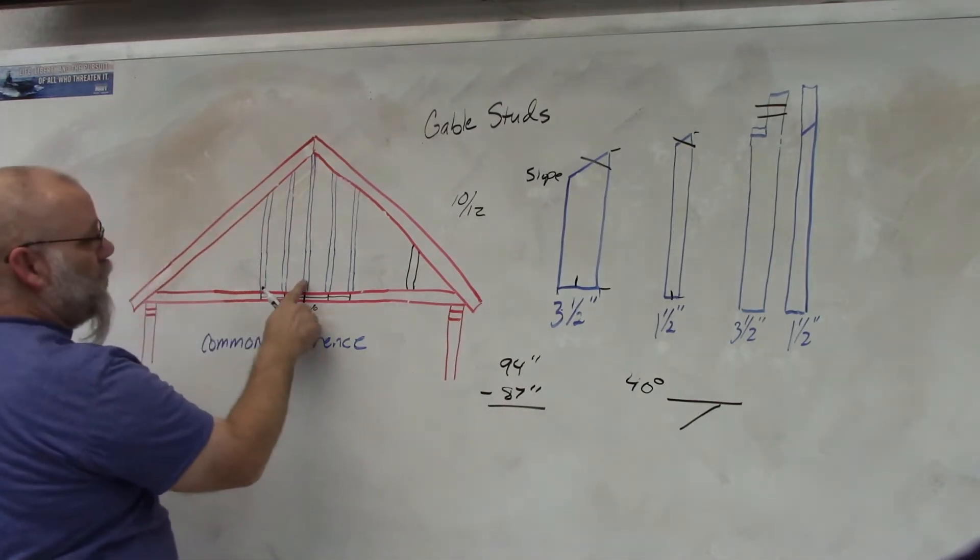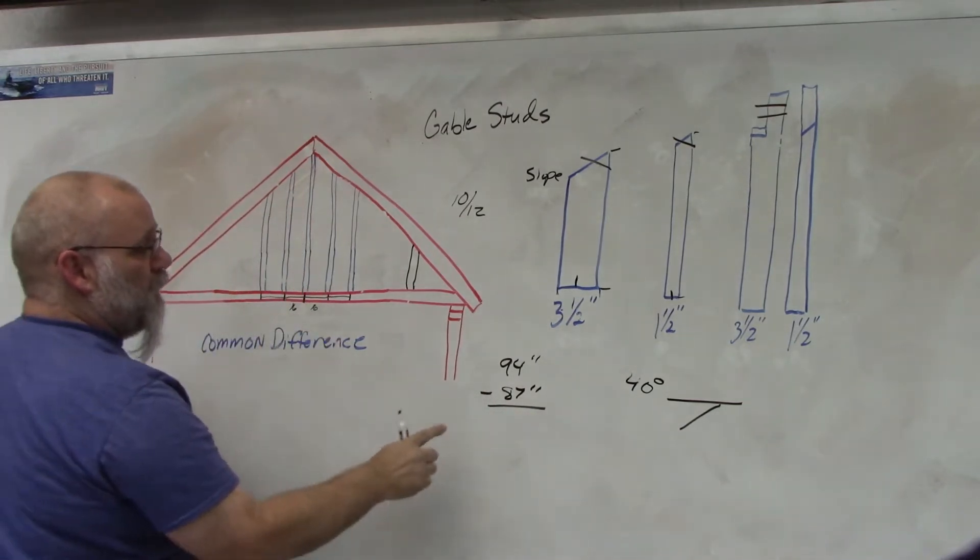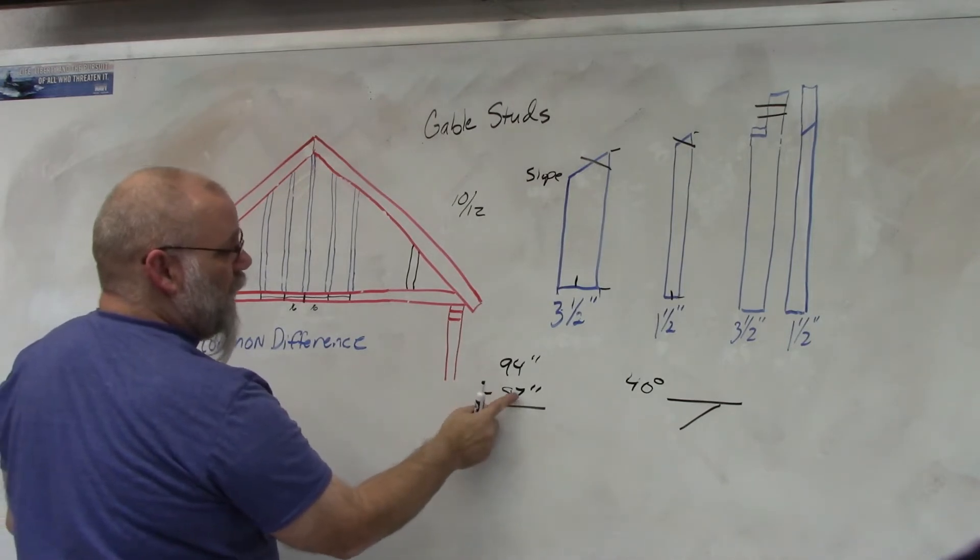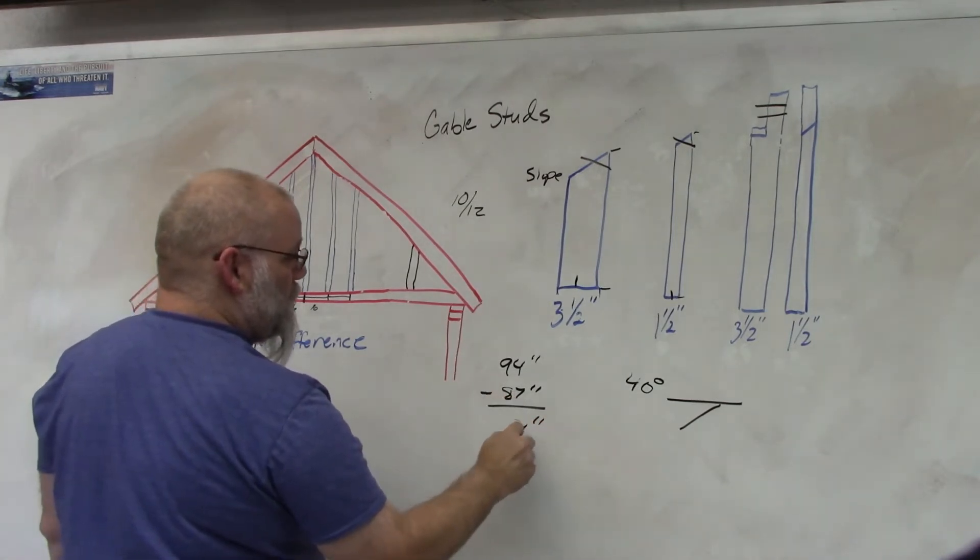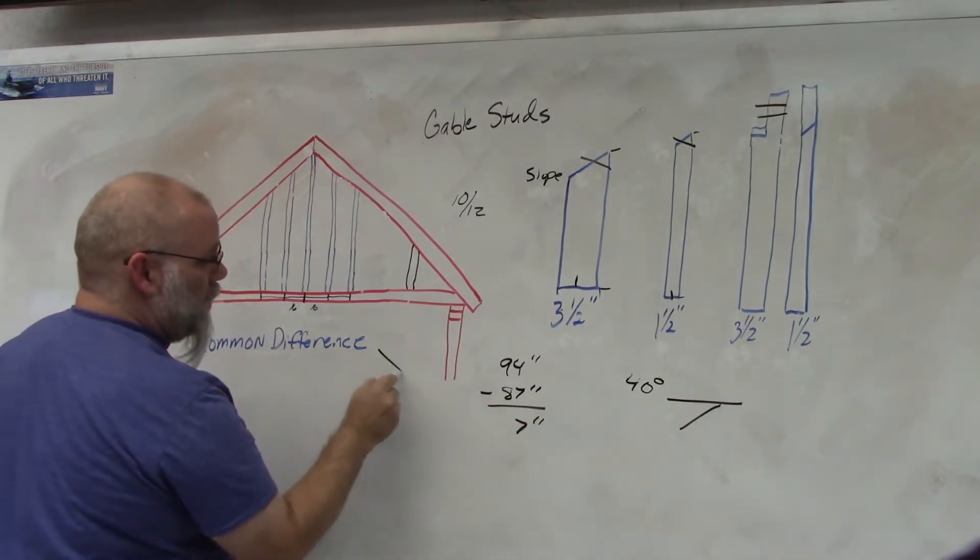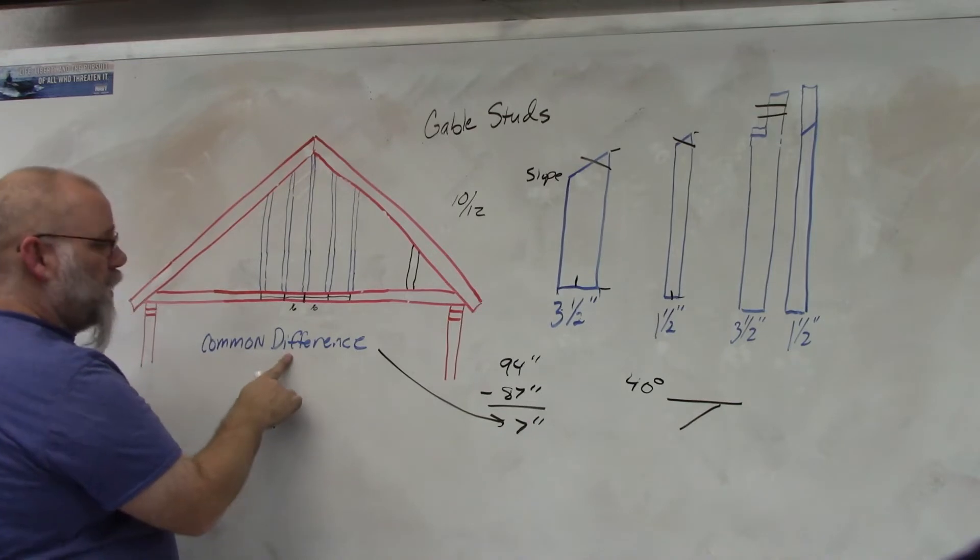So this one's 94 and this one's 87. So what you're going to do is subtract these two numbers so 94 minus 87 is 7 inches. That is what they call the common difference.